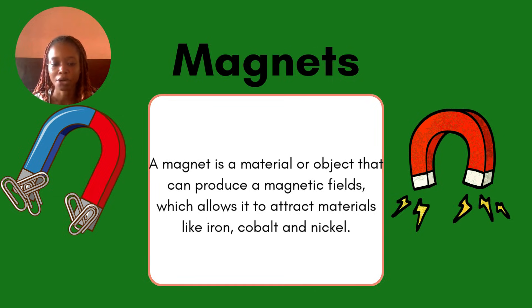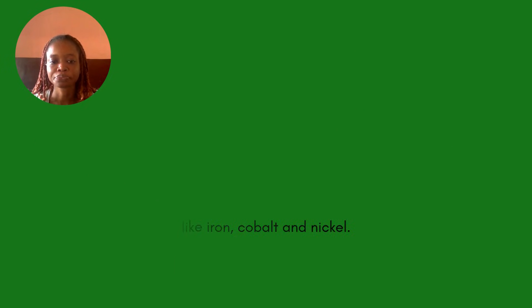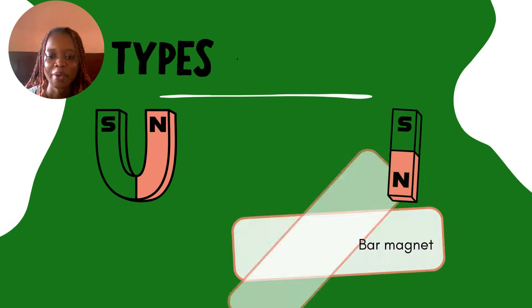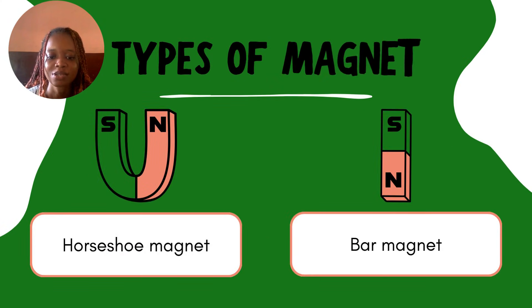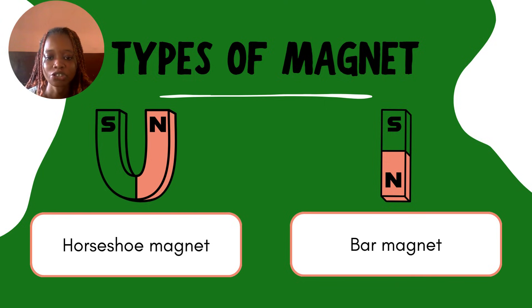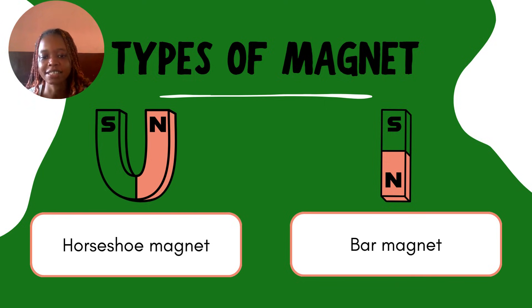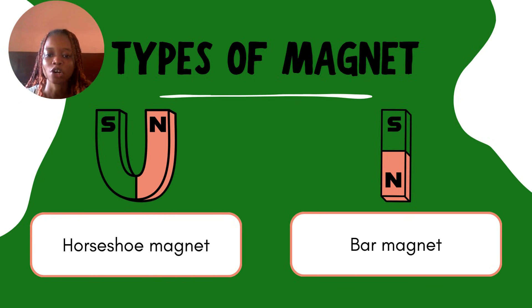We are looking at two types of magnets in this class: the horseshoe magnet and the bar magnet. You can see examples of how they look on the screen — we have your horseshoe magnet and your bar magnet.